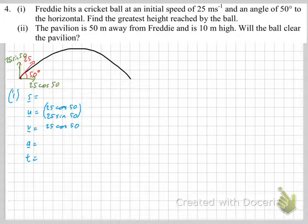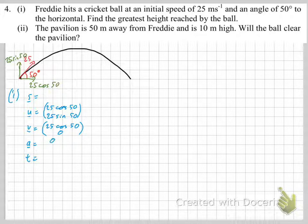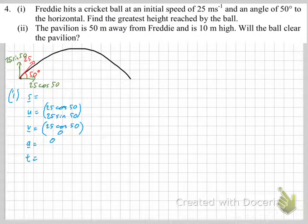V doesn't change for the x component, but at the greatest height — just like in a previous question — the velocity will be zero in the y direction at the highest point. That defines the highest point. Unless it's a point of inflection, but it's unlikely the ball is going to curl and go up further. It's a maximum, so velocity is zero.